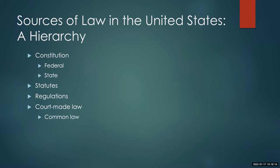We have the federal constitution at the very top, and then within each state, state constitutions are very important. The next rung down in terms of sources of law are statutes. Statutes are provisions passed by a legislative body and signed by the executive — or if the executive vetoes, that veto is overridden by a specific process. A statute that conflicts with the U.S. Constitution is invalid, but otherwise statutes are the highest level of law in our system.